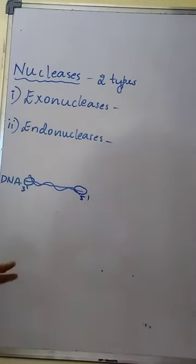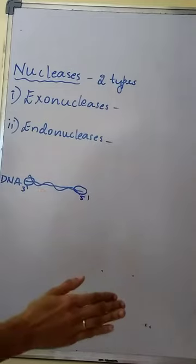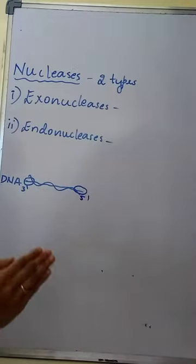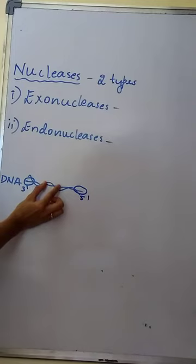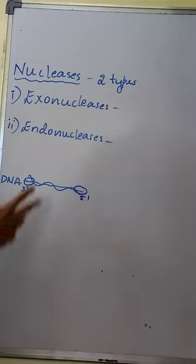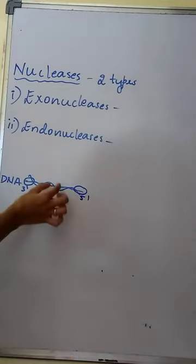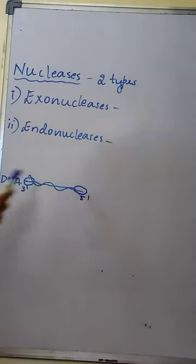Whereas endonucleases — endo means inside — remove the nucleotides at a specific position within the DNA. Endonucleases cut the DNA at the center or near the center, while exonucleases remove nucleotides at the ends. Endonucleases cut the DNA at a specific position within the DNA.